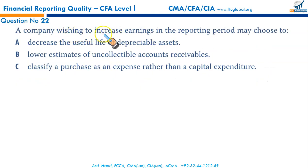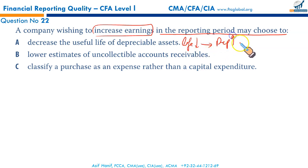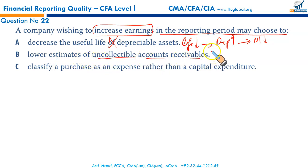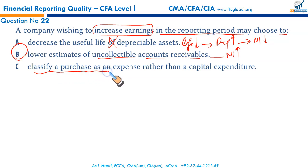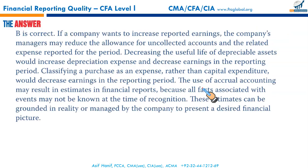A company wishing to increase earnings in the reporting period may choose to do what? Decrease the useful life of a depreciable asset — this results in higher depreciation and depresses net income, so not right. Lower estimates of uncollectable accounts receivables — when the allowance for uncollectable accounts is reduced, the charge against net income is reduced and net income goes up. Classify a purchase as an expense rather than capital expenditure — this depresses net income. B is the correct option.